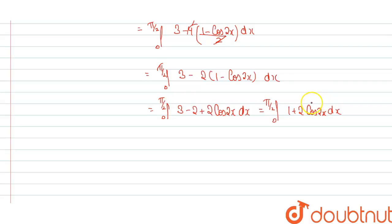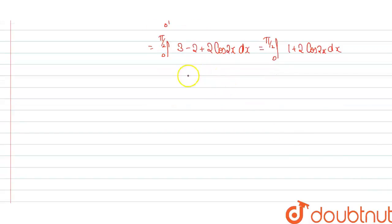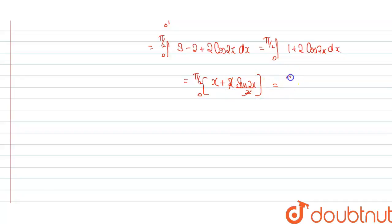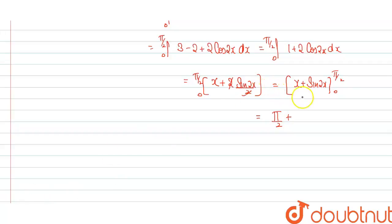Integrating 1 + 2cos(2x), we get [x + sin(2x)] evaluated from 0 to π/2. Substituting the upper limit gives π/2 + sin(π), and the value of sin(π) is 0. Substituting the lower limit gives 0. So the answer is π/2.